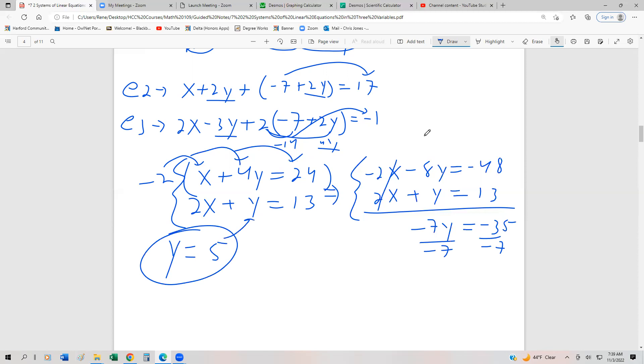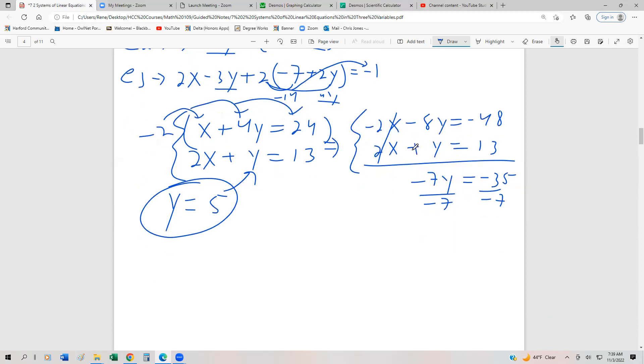Now we can substitute right here and solve for x. So we get 2x plus 5 is equal to 13. Subtract 5 from both sides. 2x is 8. Divide by 2. X is 4.